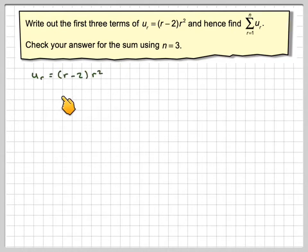Okay, so first of all, we've got U_r equals (r minus 2) times r squared. This is a cubic, because r times r squared makes r cubed. So U_1 will be 1 minus 2 times 1, which gives me minus 1.